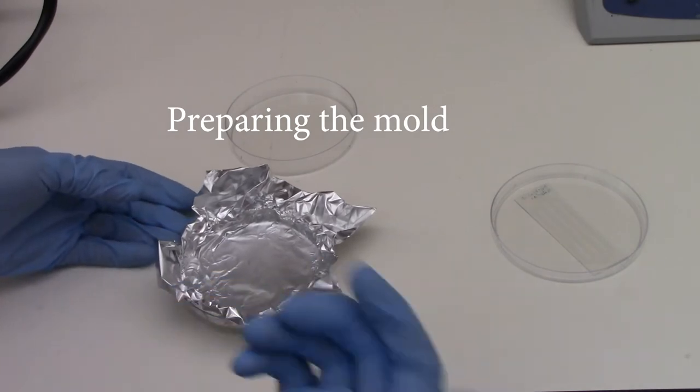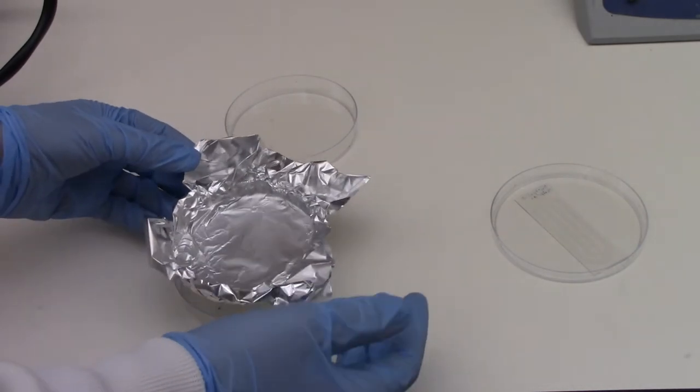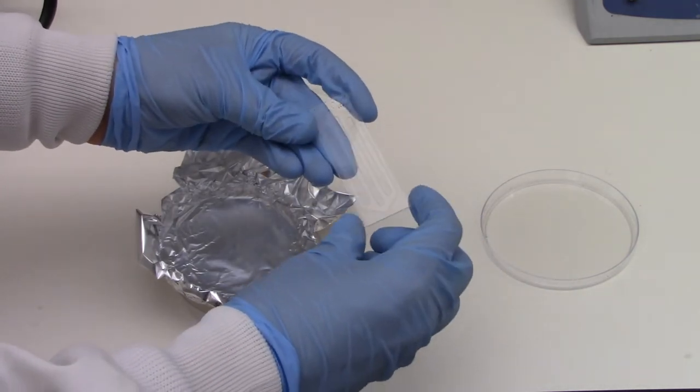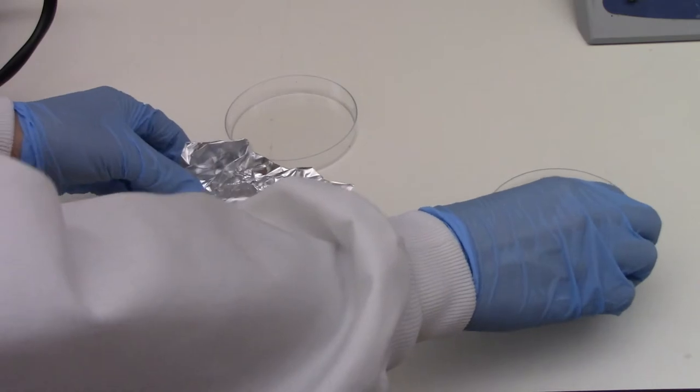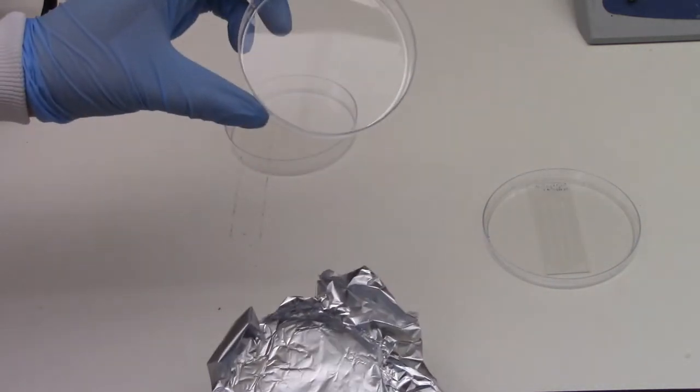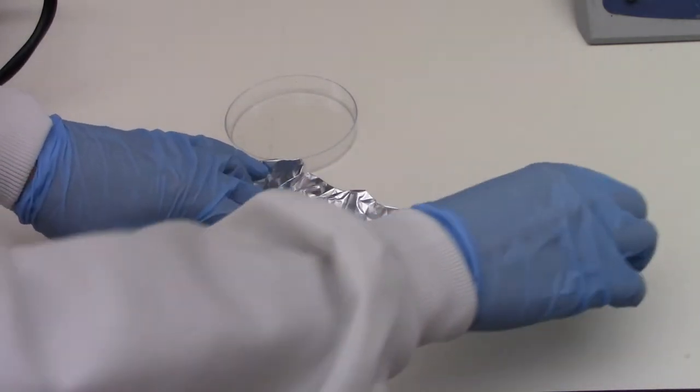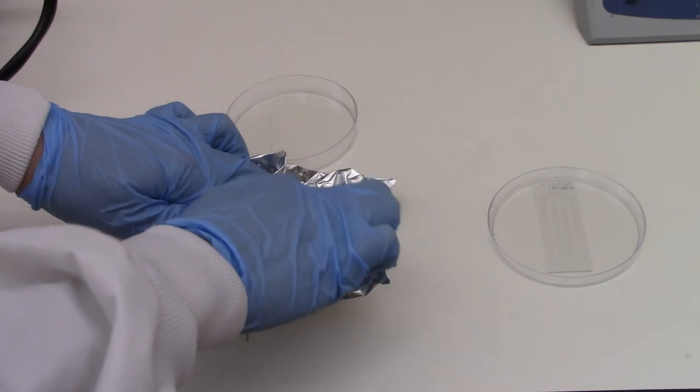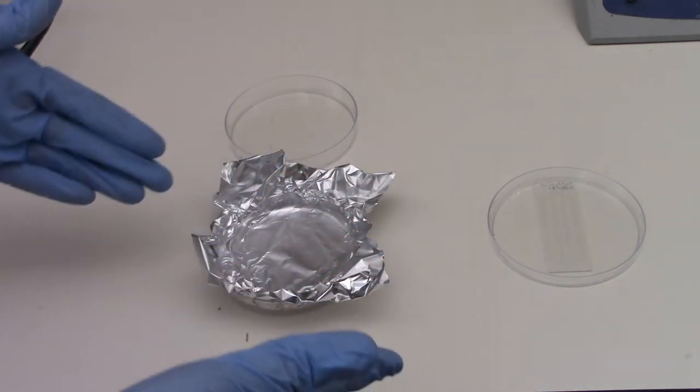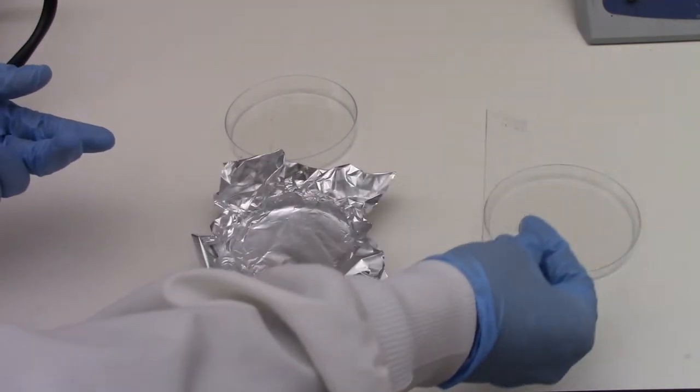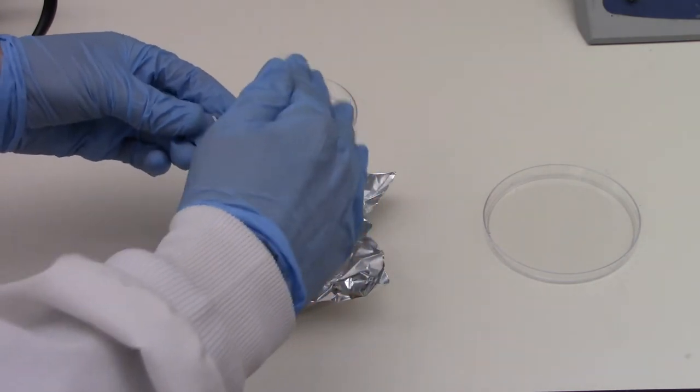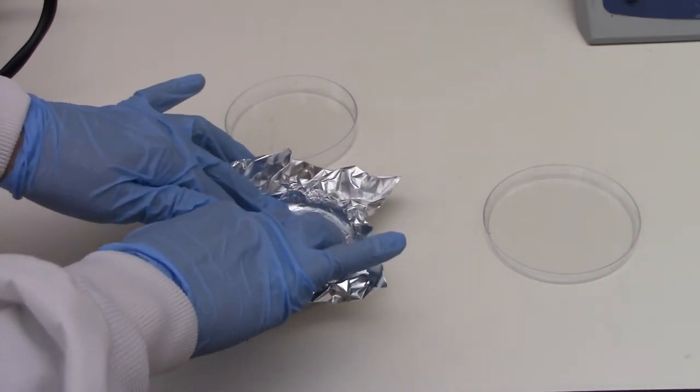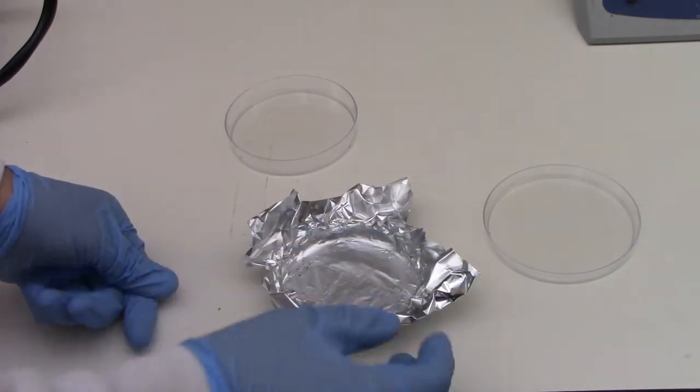So the next step before we pour our degassed PDMS is to actually prepare something to pour it into. So for this type of master mold, which has a laser cut double sided tape to form our channel features, I'm going to actually put a piece of aluminum foil that I've molded into the shape of a Petri dish within the dish. Make sure there are no tears in the foil around the creases and also that the foil is about as flat as you can make it in the center of the dish. To minimize leaks and also minimize PDMS that might run under your master mold. If you're concerned about a non-level surface, you can also tape your mold to the foil, which I won't do this time, but that is an option in later fabrication. So then I've set my mold within the foil.